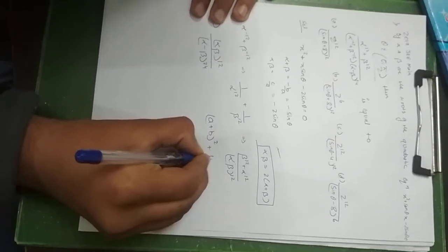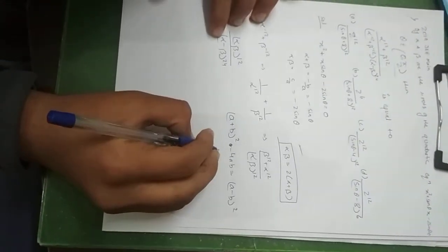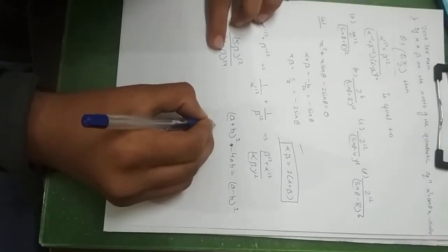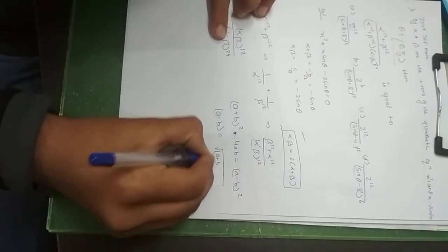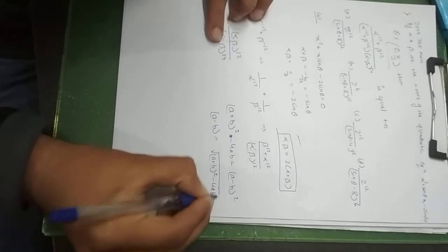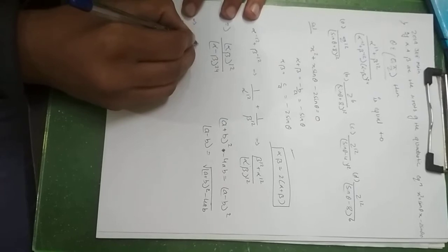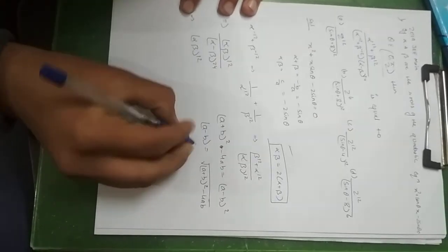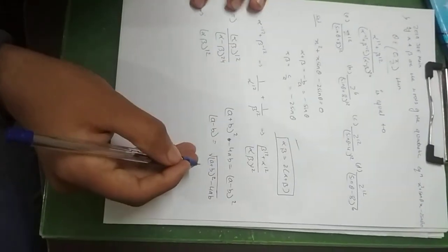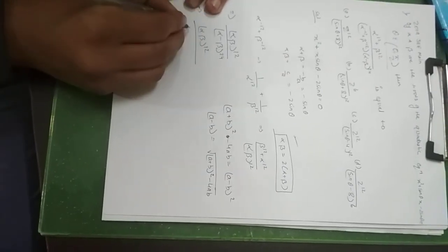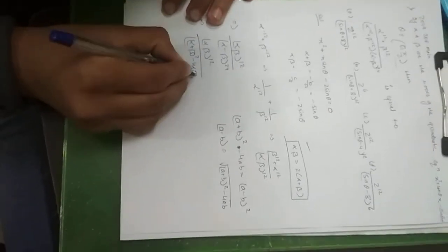We use the identity: (α − β)² = (α + β)² − 4αβ. So (α − β) can be written as [(α + β)² − 4αβ]^(1/2). Now we substitute this into the expression. Alpha minus beta whole power 24 — since (1/2) × 24 = 12, the power becomes 12.